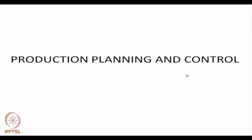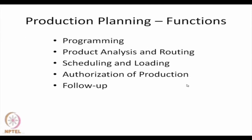In production planning and control, we had defined production planning and given 5 different functions. The first was programming, in which different forms of mathematical programming techniques could be used. We illustrated the example of aggregate production planning and product mix. We said there can be various formulations of different problems — both static and dynamic models and deterministic and stochastic models. We did not discuss much on programming aspects.